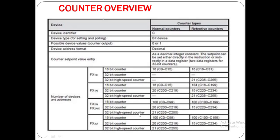In FX3U, 16-bit counters are 100 from C0 to C99, and retentive counters are also 100 from C100 to C199. 32-bit counters are 20 from C200 to C219. Retentive 32-bit counters are 15 from C220 to C234. 32-bit high-speed counters in normal condition are 21, which are C235 to C255.